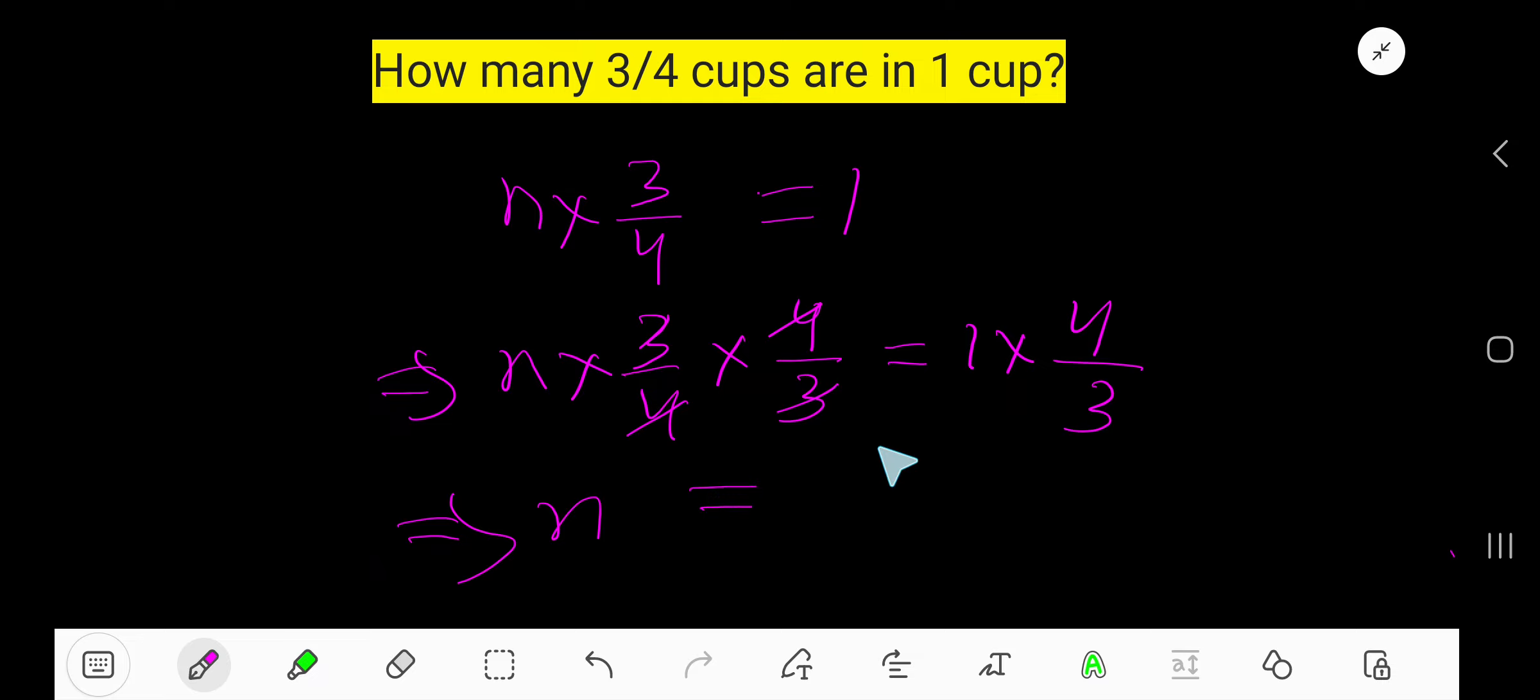getting n equal to four over three. Four over three, this is an improper fraction, so divide this four by three. Three goes into four one time, one times three is three. If I subtract, then I am getting one. So this will be the whole number, this one is numerator, and this three is denominator.